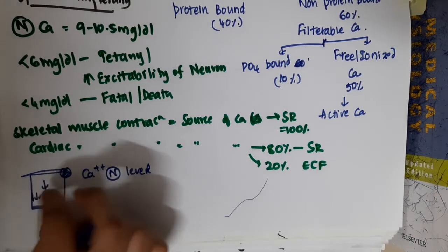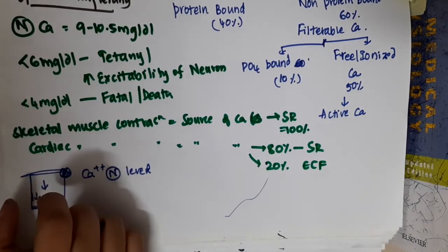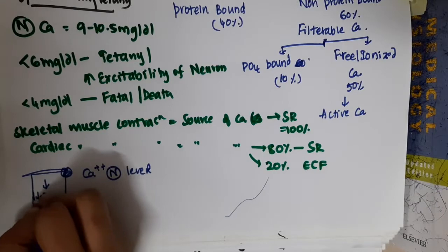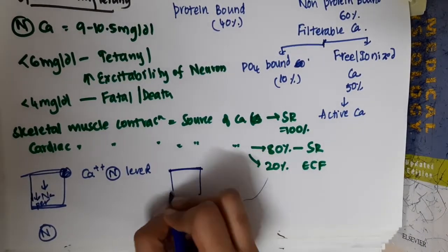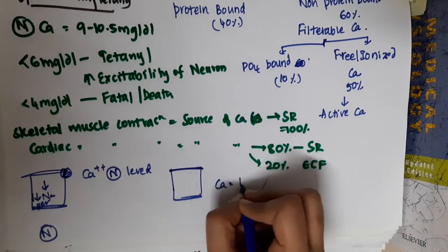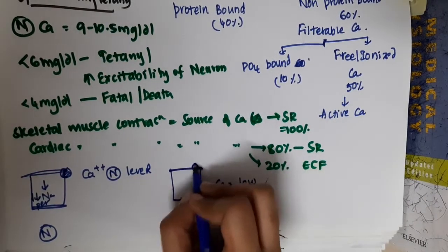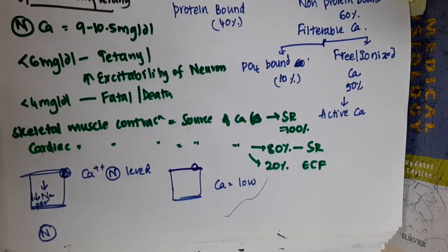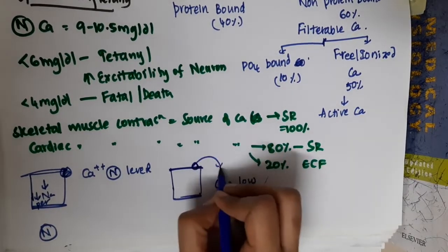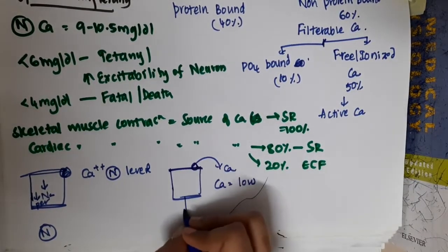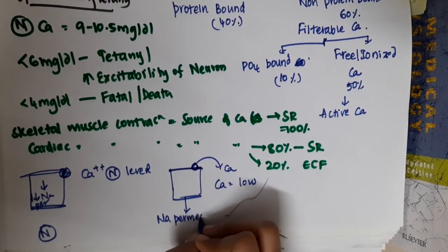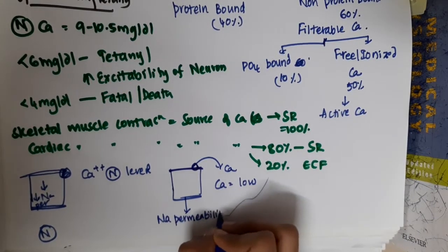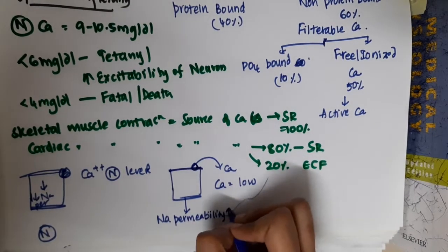When the calcium is low, the calcium present inside the cell will try to go outside. As a result, sodium permeability increases in the cell. When positive charges are going out, there will be less potential difference.